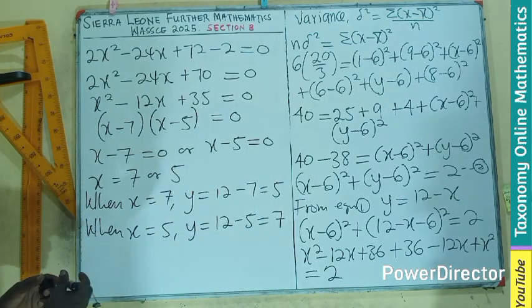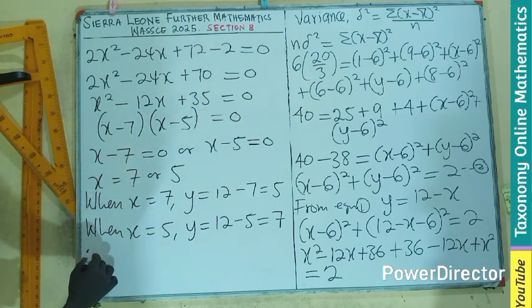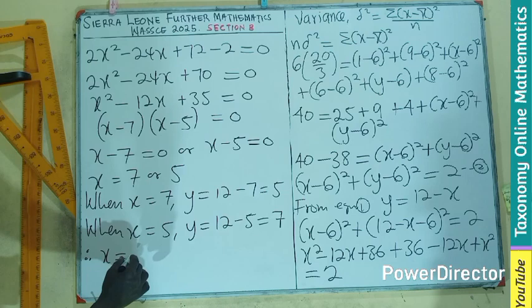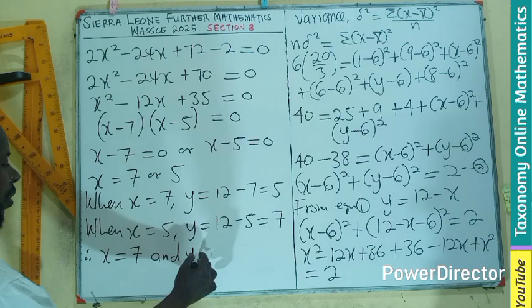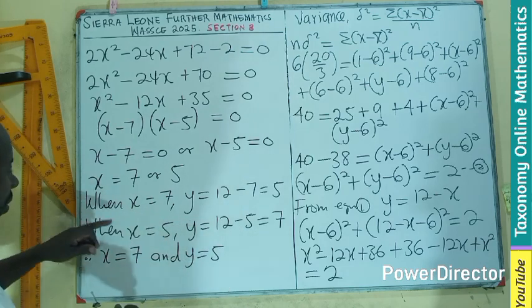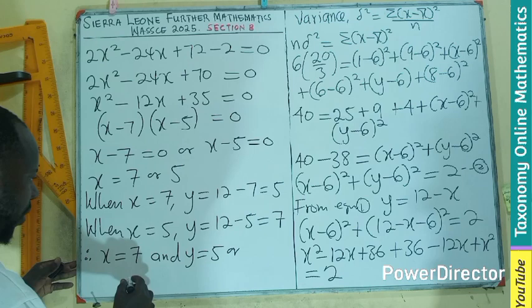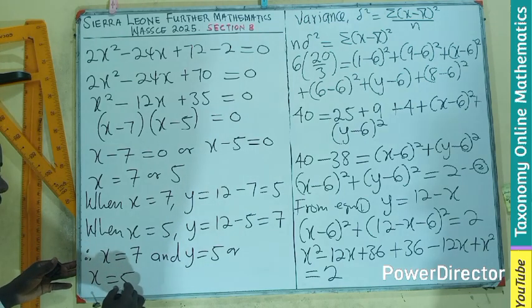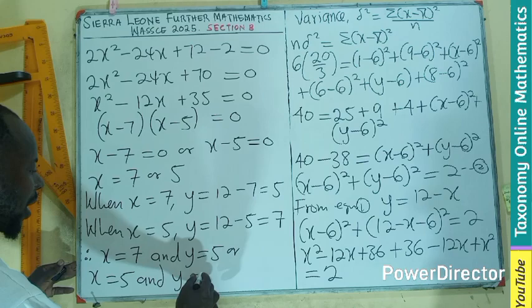So, here, the values are going to be alternating. So, we can only say that, therefore, x equals to 7 and y will be equals to 5, or x equals to 5 and y equals to 7. So, they are changing their position.